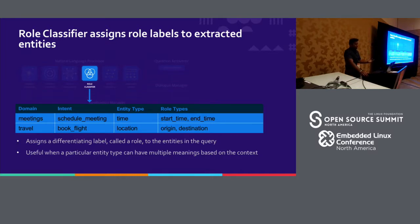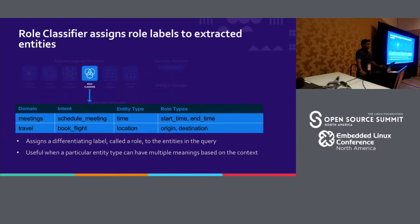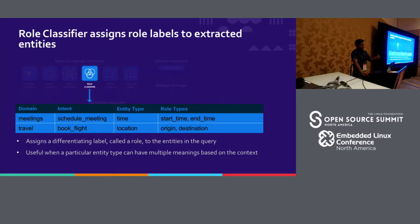There's also a role classifier, which is a sub-problem of the entity classifier. For instance, when you classify a particular time entity, you want to set it to a start time or an end time. When you say 'set the alarm at 5 a.m.,' 5 a.m. could be a start time. But if you say 'show me something between 5 a.m. and 7 p.m.,' then 5 a.m. is the start time and 7 p.m. is the end time. These are sub-classifications of an entity.